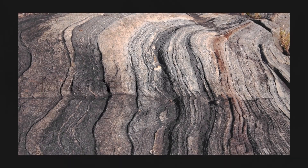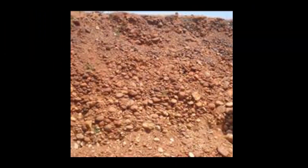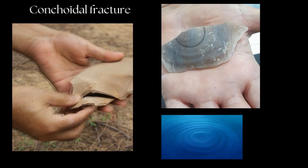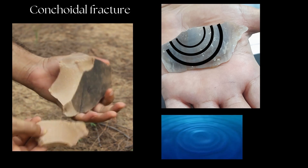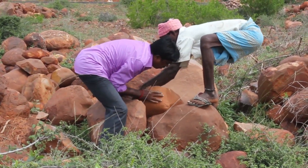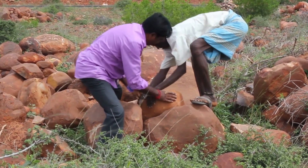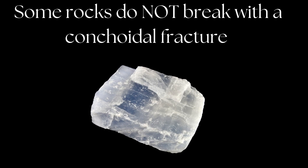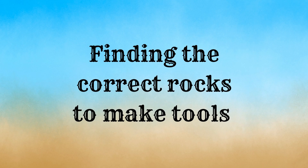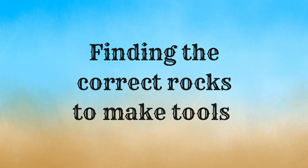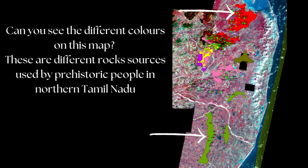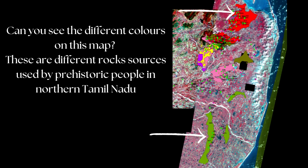Metamorphic rocks are formed when heat and pressure alter a pre-existing rock. Here is a tool made on quartzite. Prehistoric populations chose rocks that broke in a very particular way, called a conchoidal fracture. They also knew where to source these rocks and how to quarry them if needed. Prehistoric people were indeed very clever and knew all about rock properties. These are different rocks used by prehistoric people in northern Tamil Nadu.